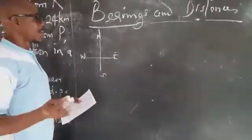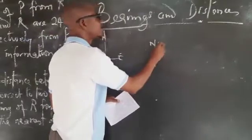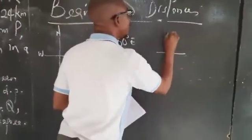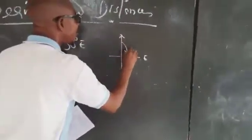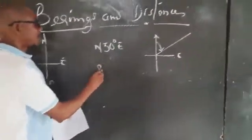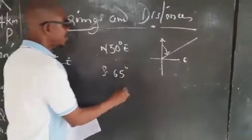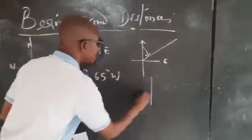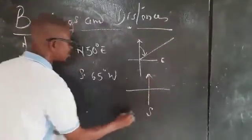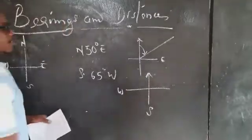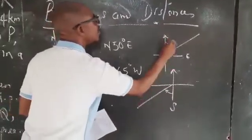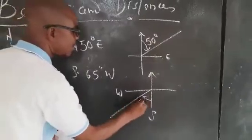A location can be given as north 50 degrees east, which goes this way. Or it can be south 65 degrees west, which will go like this. So this one is 50, this one is 65.